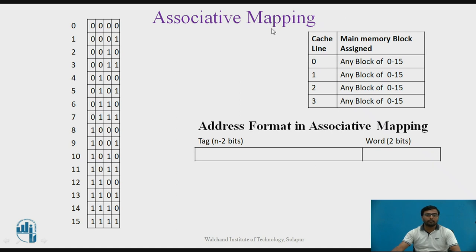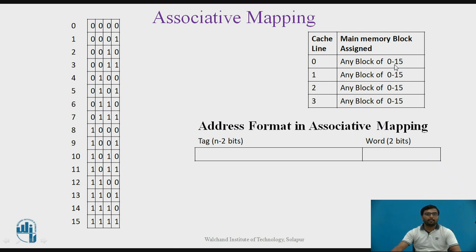In associative mapping, unlike the direct method where each cache line must contain a specific block from main memory, there is no such restriction. Consider blocks 0 to 15 from main memory: with a 6-bit address, the last 2 bits identify the word and the remaining 4 bits identify the tag address. In direct mapping, block 0, 4, 8, and 12 mapped to line 0; blocks 5, 9, and 13 mapped to the next line, and so on. But in associative mapping, any of the 0 to 15 blocks can be mapped to any cache line.